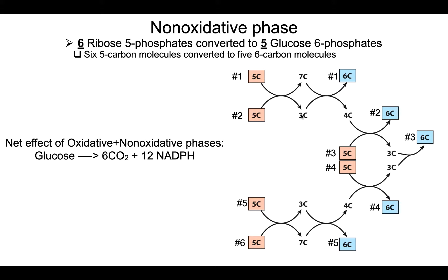going to focus on that. I am not going to have you remember that. So the net effect when you combine both the oxidative and non-oxidative phases of the pentose phosphate pathway is that you're going to turn glucose into 6 CO2 and 12 NADPH.